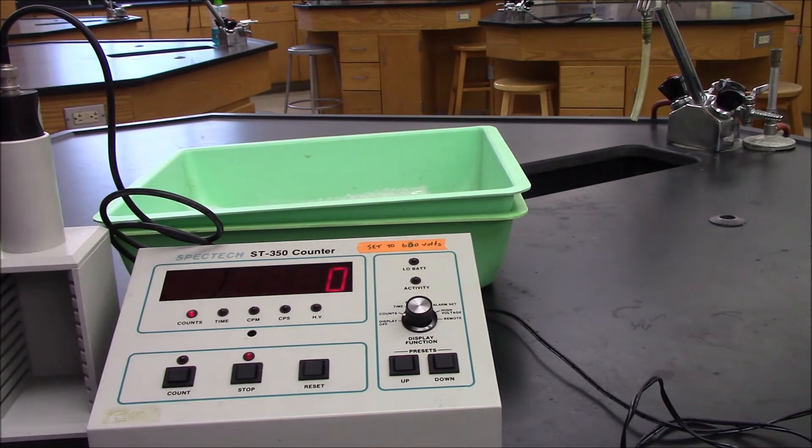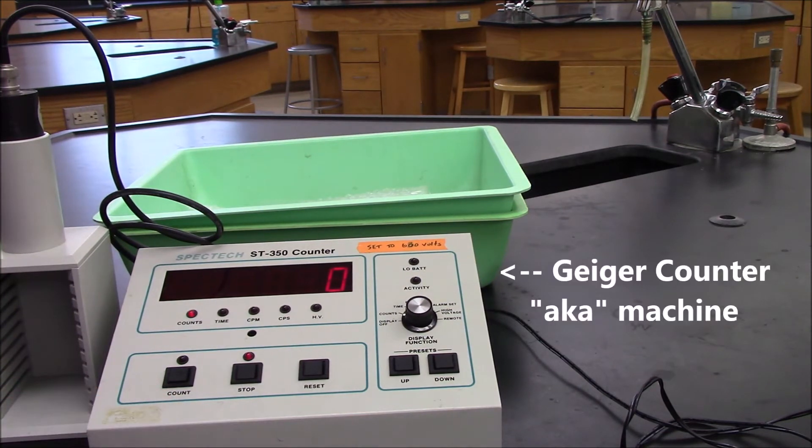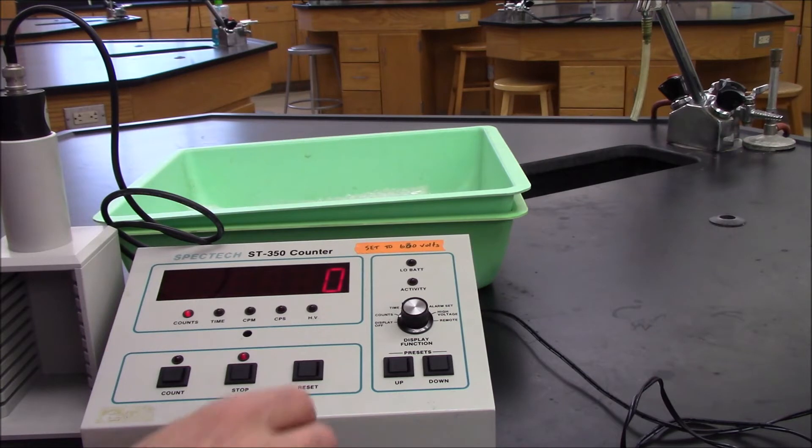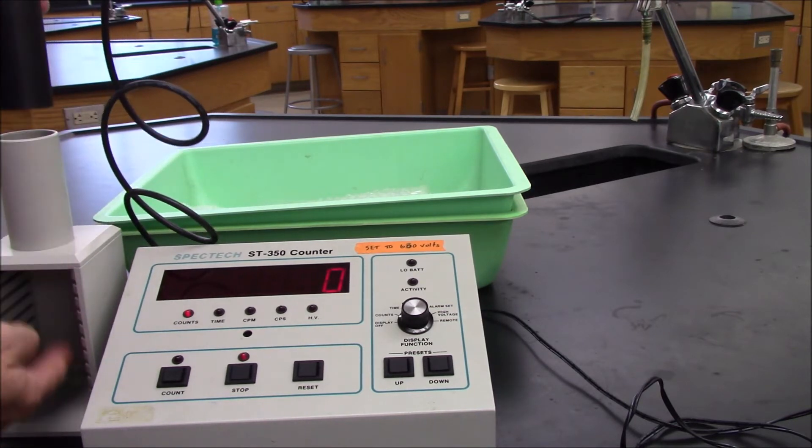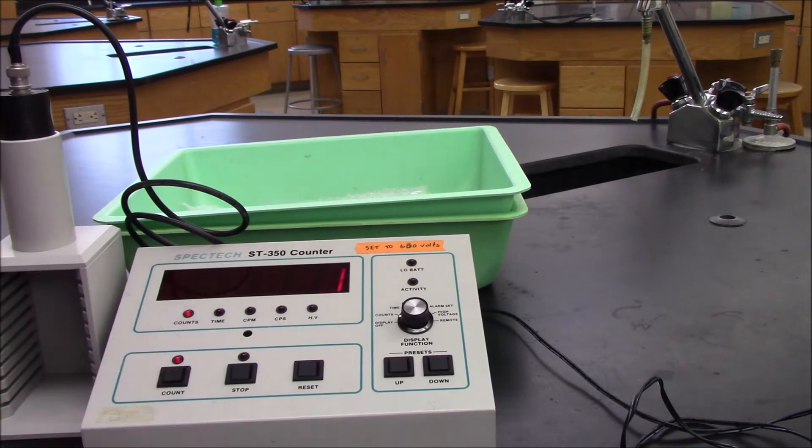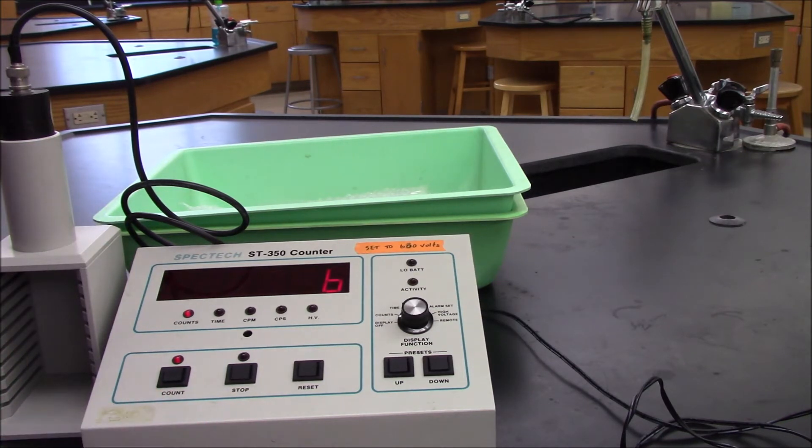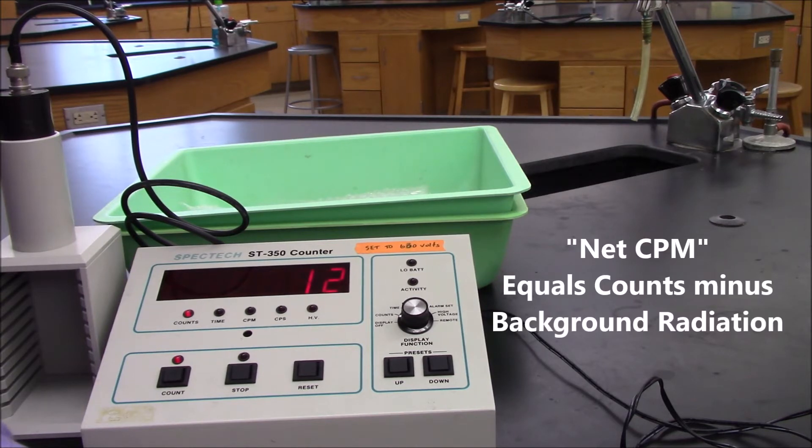So what I'm going to do first is calibrate the machine and do our background count. The machine is set to count for one minute. What we're doing now is there's no radioactive source under here. So I'm going to hit count. And what we're getting now is what's known as background radiation. This is the natural radiation in the environment where we are. The world is naturally radioactive to some small extent. And so every time we measure the radioactivity from a sample, we're also getting these counts from what's called natural background radiation.